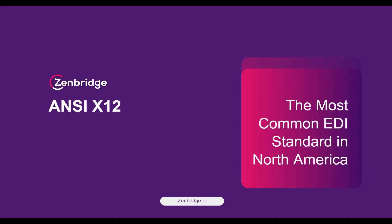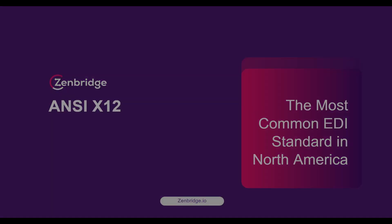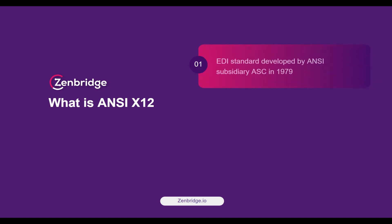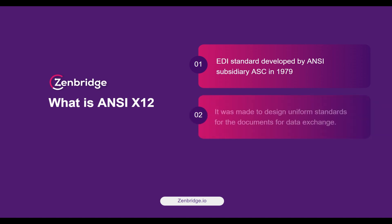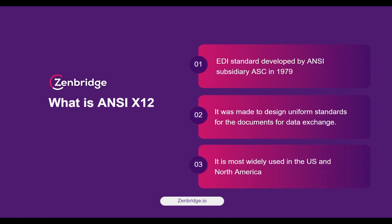Hi, today we are looking at ANSI X12, the most common EDI standard in North America. The ANSI subsidiary ASC, or Accredited Standards Committee, developed the X12 EDI standard in 1979. It was made to design uniform standards for multi-industry electronic data interchange of documents. At the beginning it was only being used in North America, but it soon grew popular worldwide for its wide adaptability for all kinds of business documents.